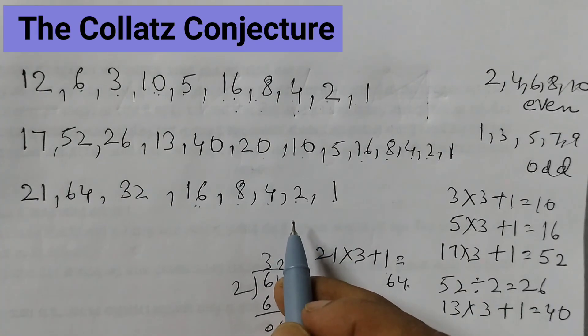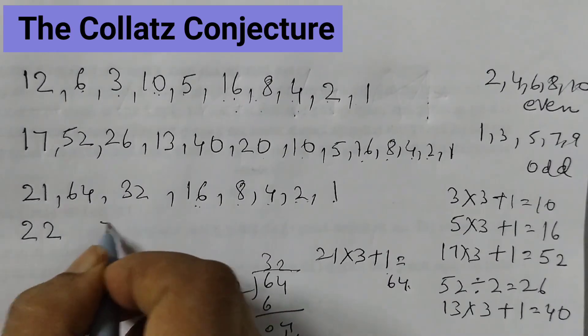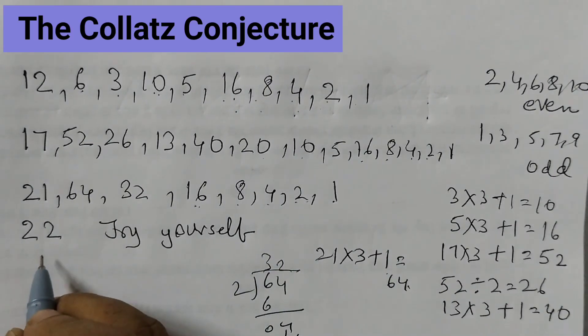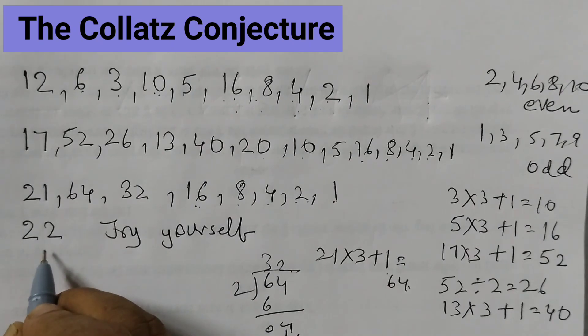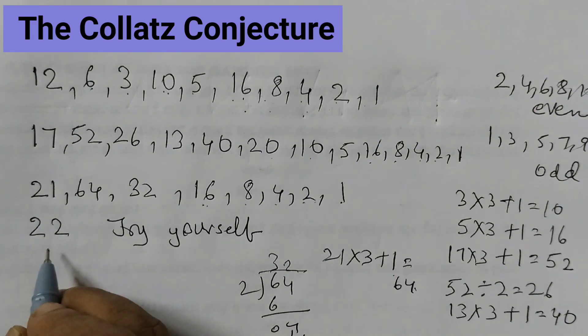Hope you understood how to get this. So the next number you can take is 22 and this one you try yourself. Try this the same way. This is an even number, so take half of this. If you get an odd number, multiply by 3, add 1. If you get an even number, again take half of this. Try to complete this pattern.